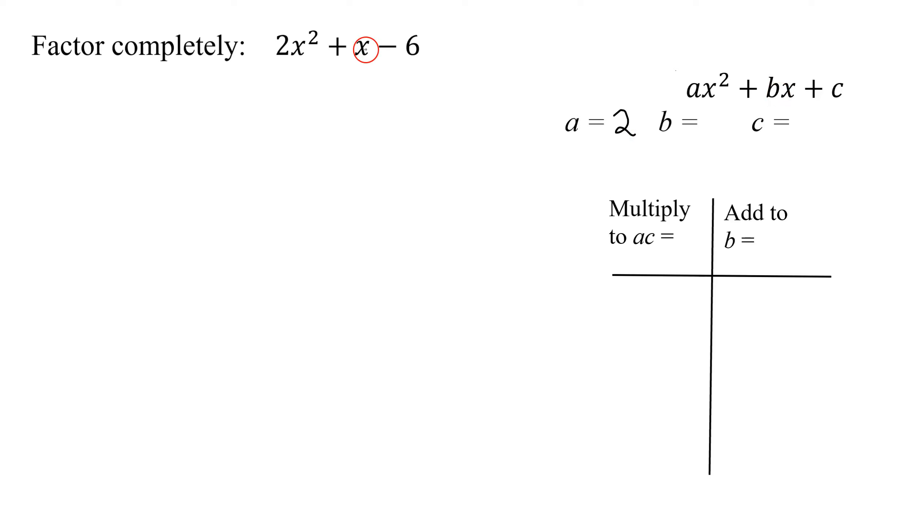b is the coefficient of the x. What number's in front of this x? We're too efficient to write it - there's a 1, so b is 1, and c, the constant term, is negative 6.